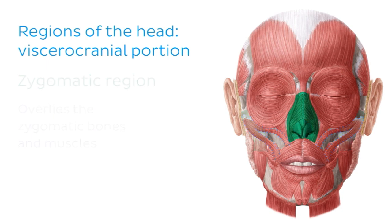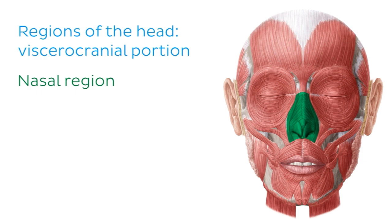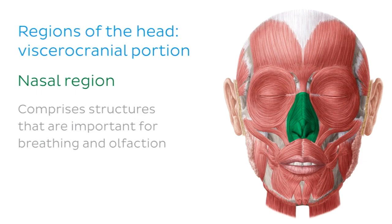Now that we've seen the bilateral regions of the face, let's look at the regions situated along the midline, starting with the nasal region. This region is named after the nose and includes it. The nasal region comprises structures that are important for both breathing and olfaction.